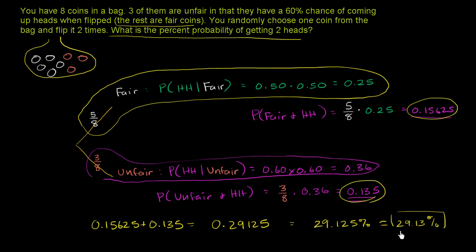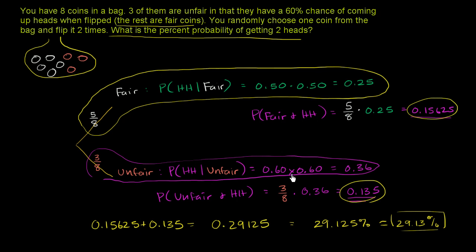So we have a little less than a one-third chance of this happening. The reason it's above 25% makes sense — if everything in the bag were a fair coin, there would only be a 25% chance of getting two heads. Our chance is a little higher because there's a 3/8 probability that we pick a coin that has a higher-than-even chance of coming up heads.